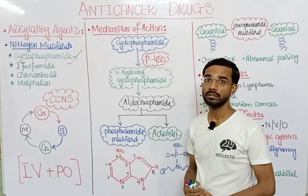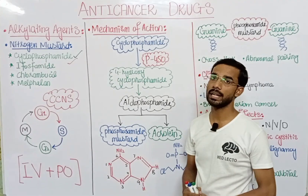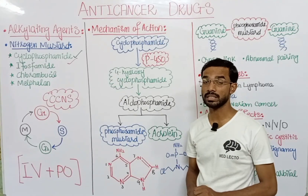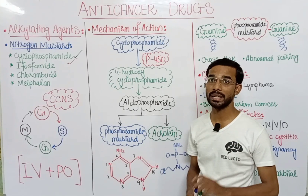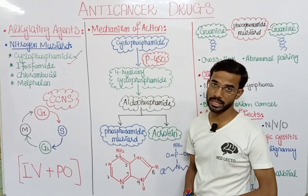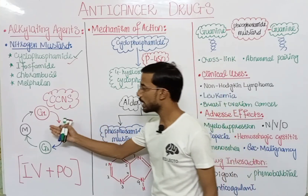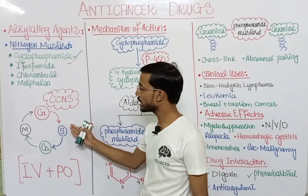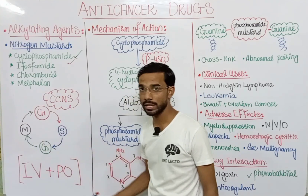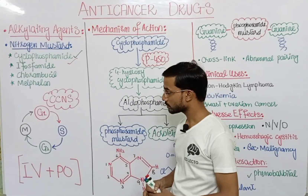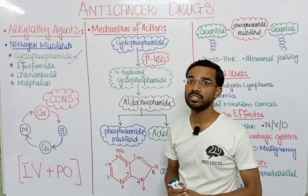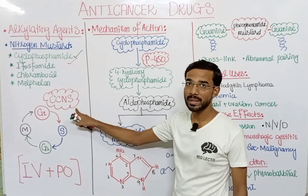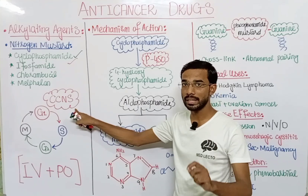Cyclophosphamide is actually a cell cycle non-specific drug. It means that cyclophosphamide acts on both dividing and non-dividing cells. In the cell cycle you see four phases commonly: G1 phase, S phase, G2 phase, and M phase, and after that there is interphase in which there is no DNA replication. Cyclophosphamide, being non-specific, acts on both dividing and non-dividing cells.